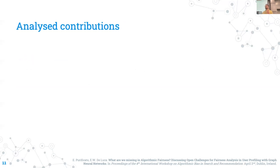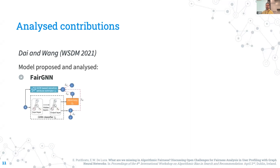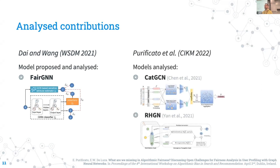We analyze two main contributions. The first one is Diane Wang, presented at Wisdom 2021, where they propose and analyze the fairness of an architecture called Fair GNN. The second one is our work published last year at CIKM, where we assess the fairness of two state-of-the-art GNN models for user profiling called CAD-GCN and RH-GN.